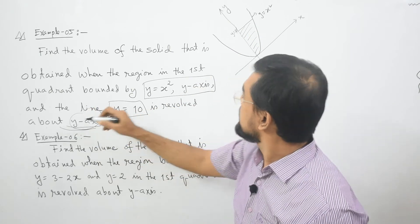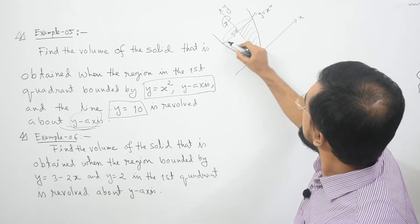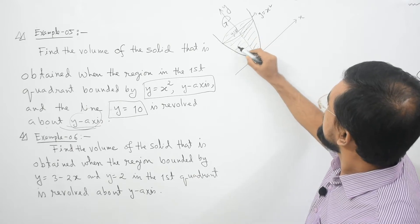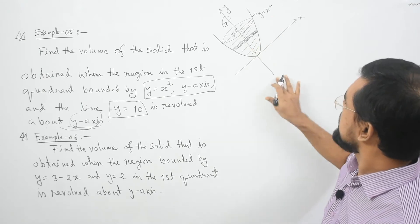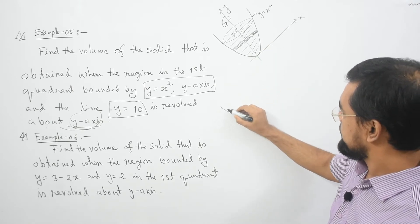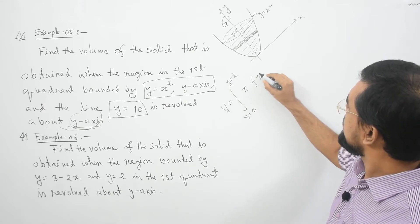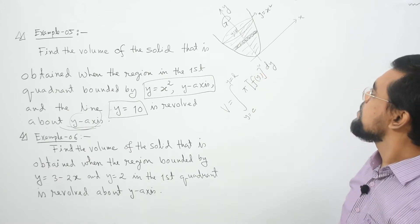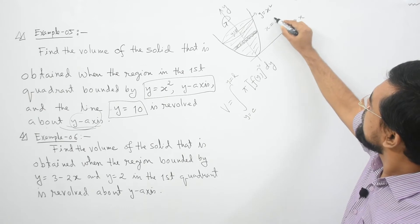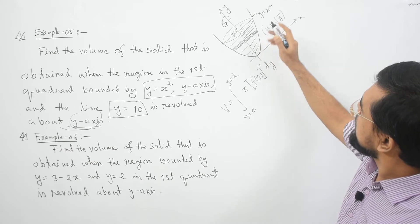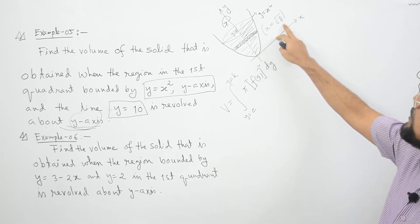If you revolve this region about the y-axis, then you will get a solid. Now if you take a cross section here, it will be perpendicular to the y-axis. So our formula in this case will be integrating with respect to y from c to d: π [f(y)]² dy, and the radius of this cross section is x. Since our region is the positive part, x equal to root y.